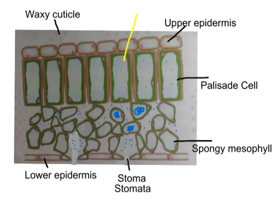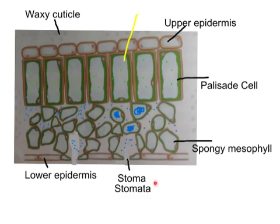As water evaporates to form vapour, it diffuses through the leaf and the water vapour potential starts to rise. Water vapour potential is essentially the pressure being applied by that water vapour. There is a high water vapour potential inside the leaf — a small space with quite a lot of water vapour — and a much lower water vapour potential outside the leaf, since the leaf is continuously moving water into the air spaces.